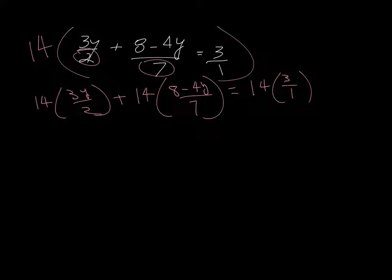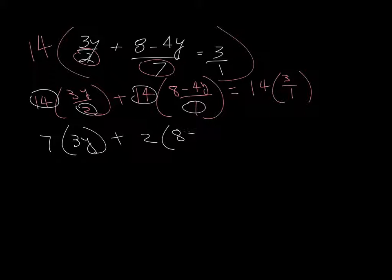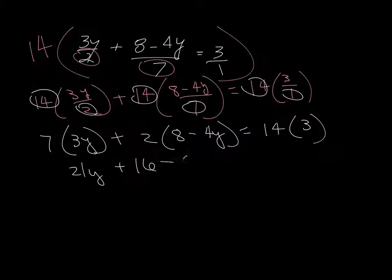Okay, now let's reduce this with this, and we get 7. This and this, and we get 2. And then this and this, we get 14, and that doesn't do anything. Alright, so we get 21y plus 16 minus 8y, so we distribute that, equals 14 times 3 is 28, 32, 28, 38, 42.